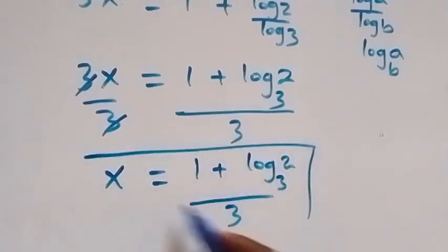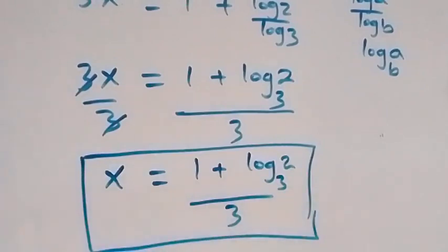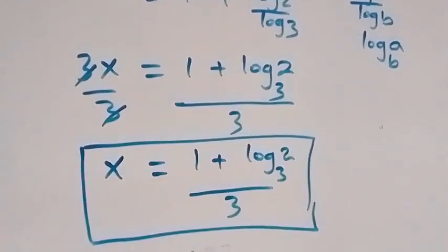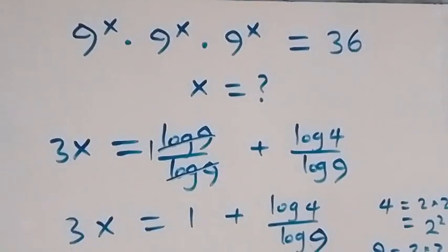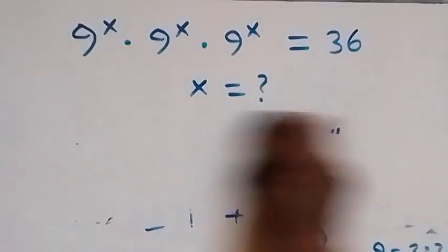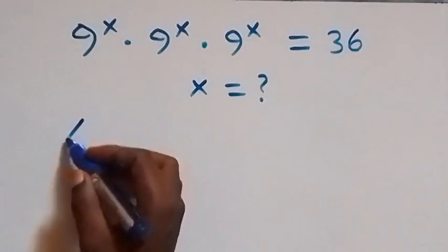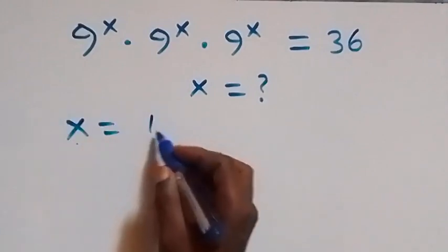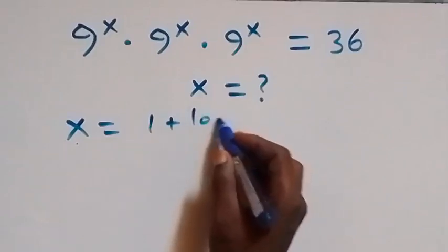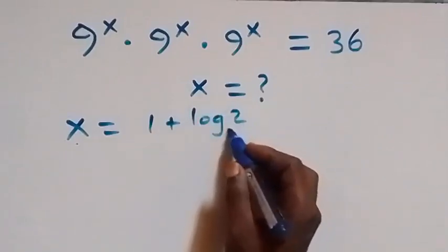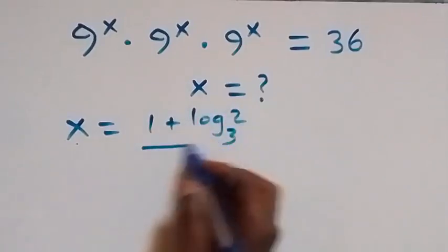We have x equals (1 plus log 2 base 3) over 3. So the value of x in this given problem is x equals (1 plus log base 3 of 2) over 3. Now let's check if this satisfies the given problem.